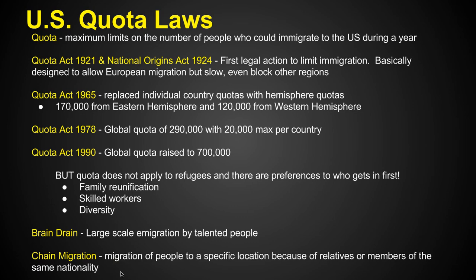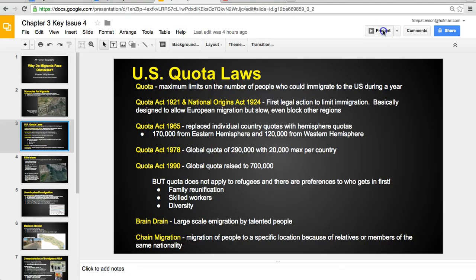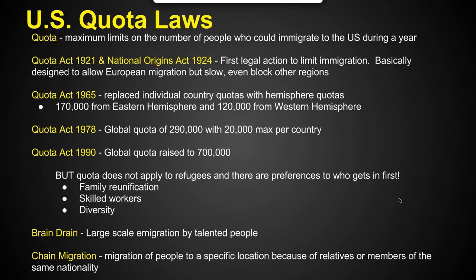The other thing we look at is chain migration. When international migrants move between countries, we usually see them all end up in a very similar area together. It makes sense that relatives want to live near each other in a completely new country, or that Chinese immigrants would naturally want to locate in similar areas. If you were traveling across the earth, wouldn't you want to link up with people who are like-minded, similar to you, and from the same country?